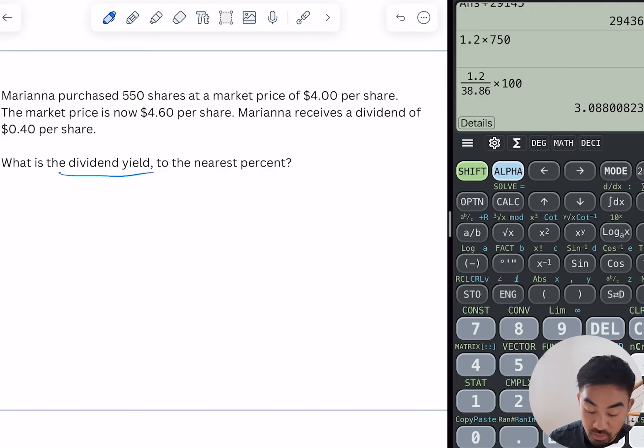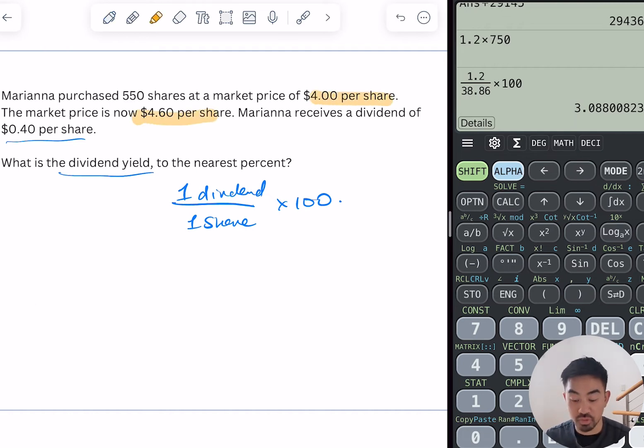Remember dividend yield is one dividend divided by one share times 100. So what do we have? We have one dividend which is 40 cents, but you have a problem—you got two share prices. So for the sake of this course and for the sake of doing these questions, you're gonna want to use the current share price for the dividend, or the market price, so this one here.